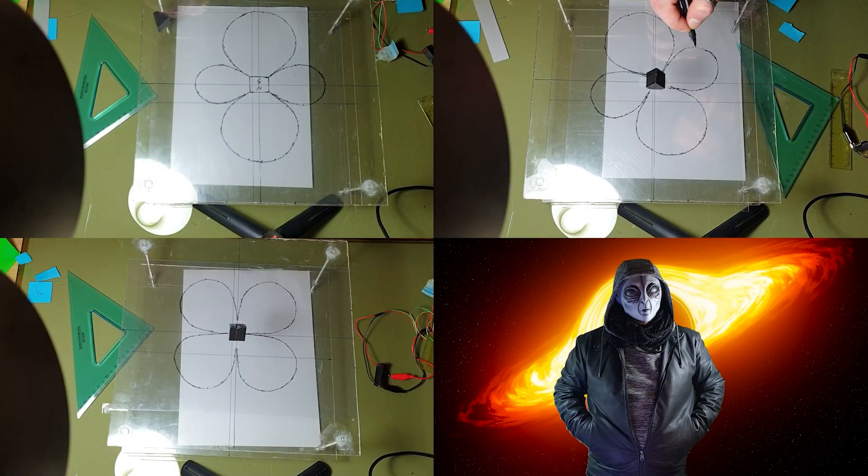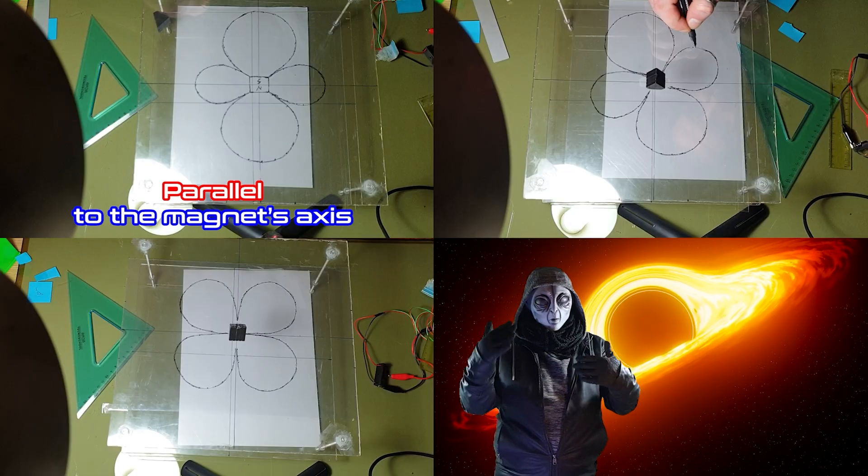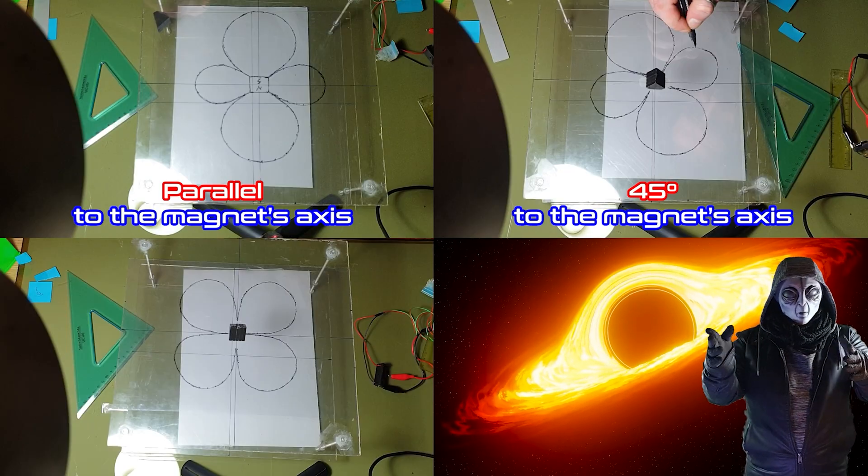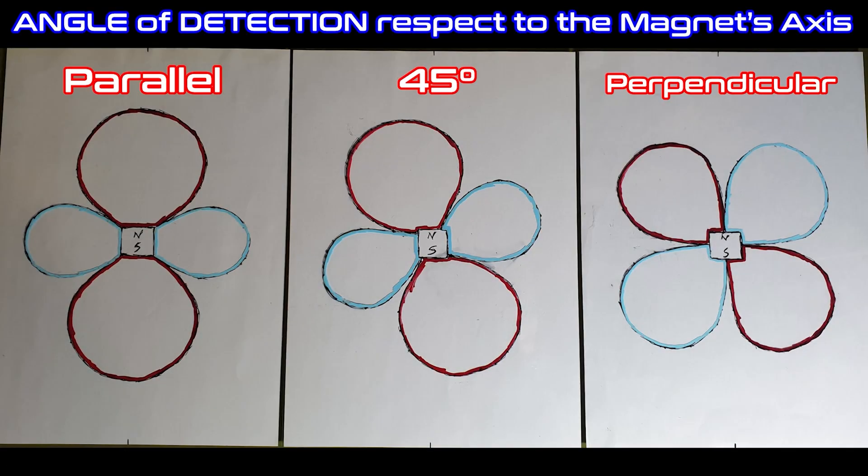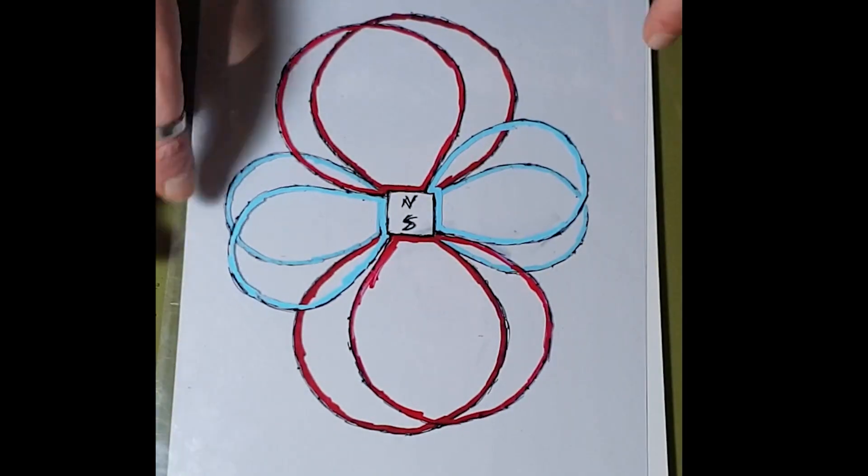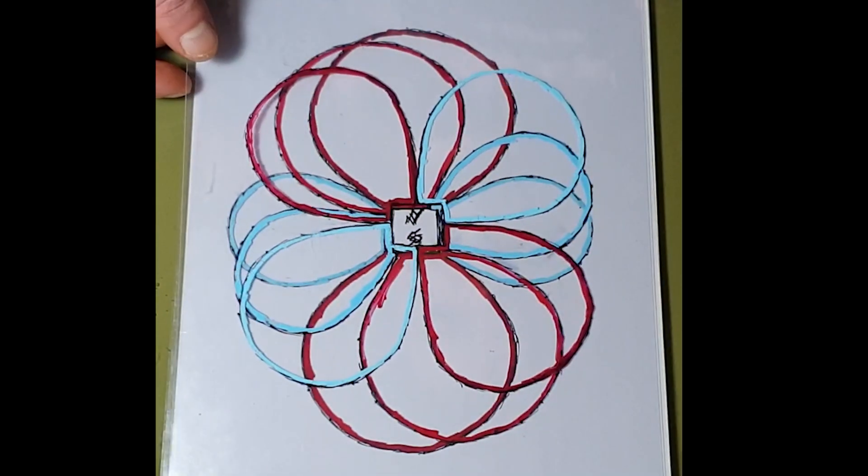Look at these three readings. One parallel to the magnet's axis, one at 45 degrees, and one perpendicular. The main lobe of the field twists along the axis, and the opposite lobe does the same.